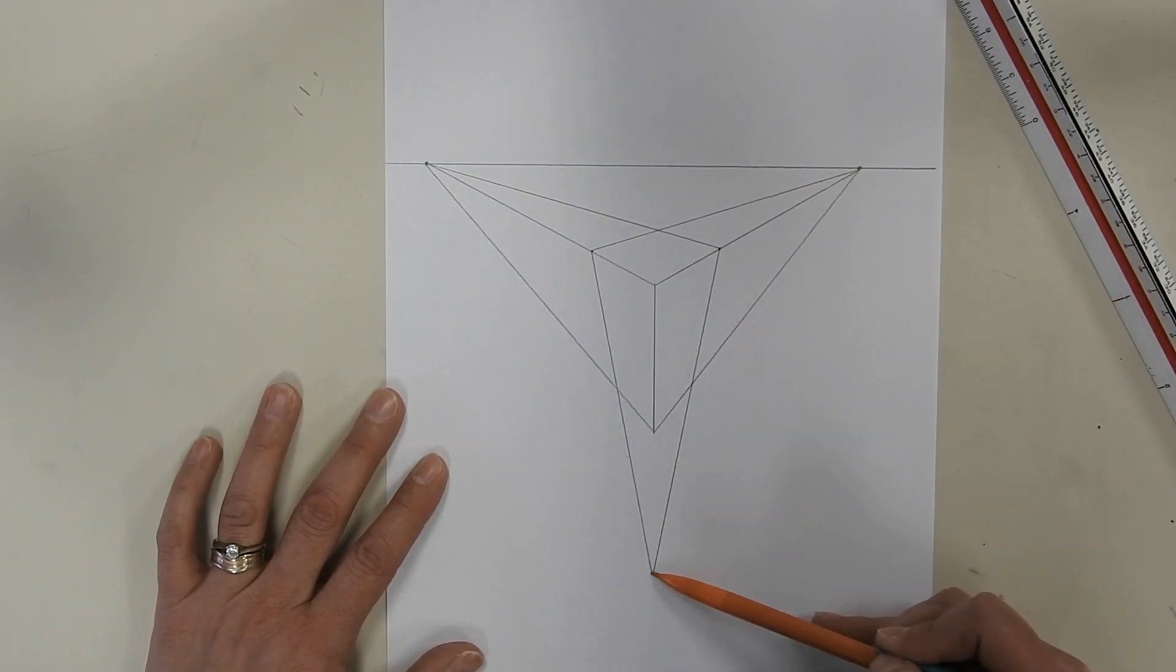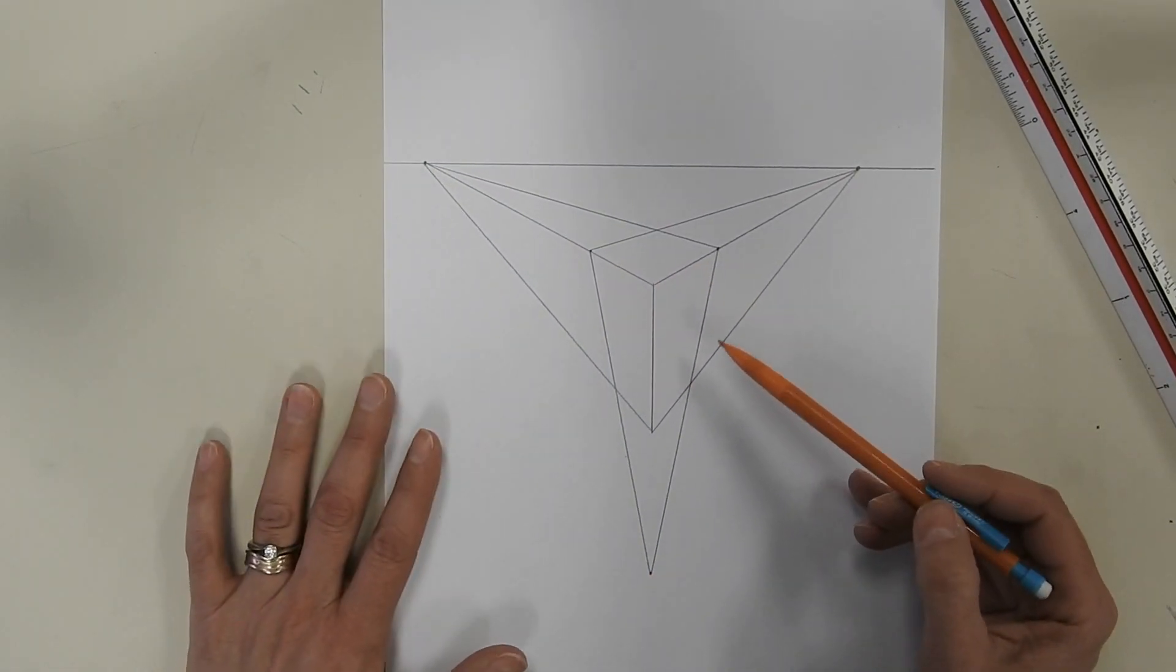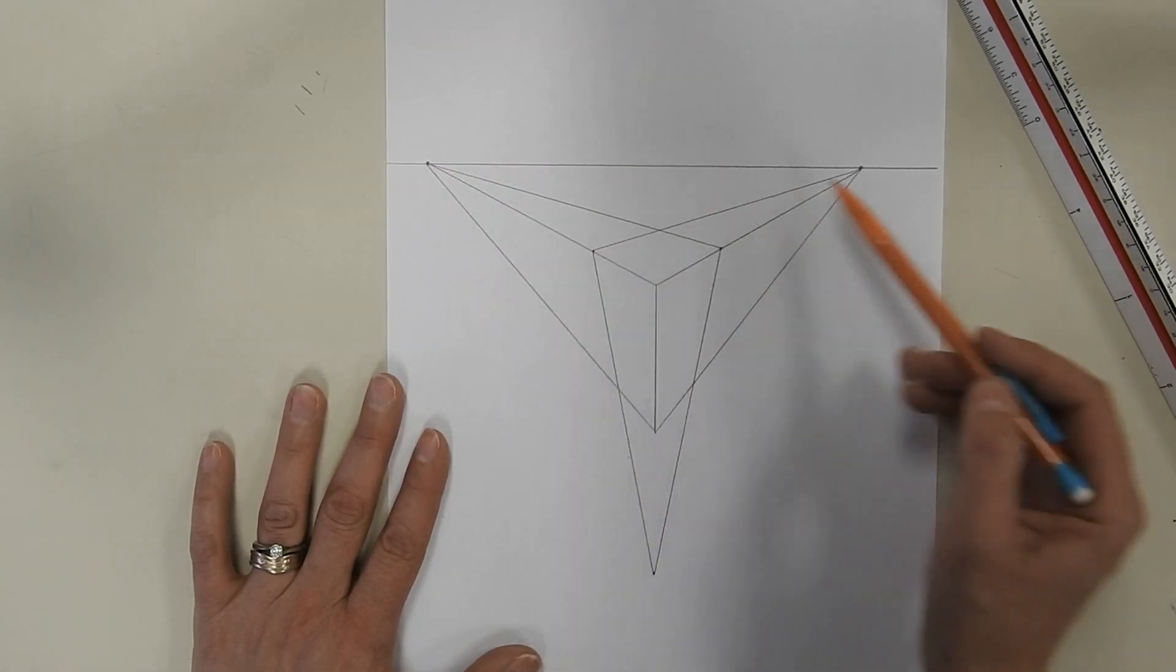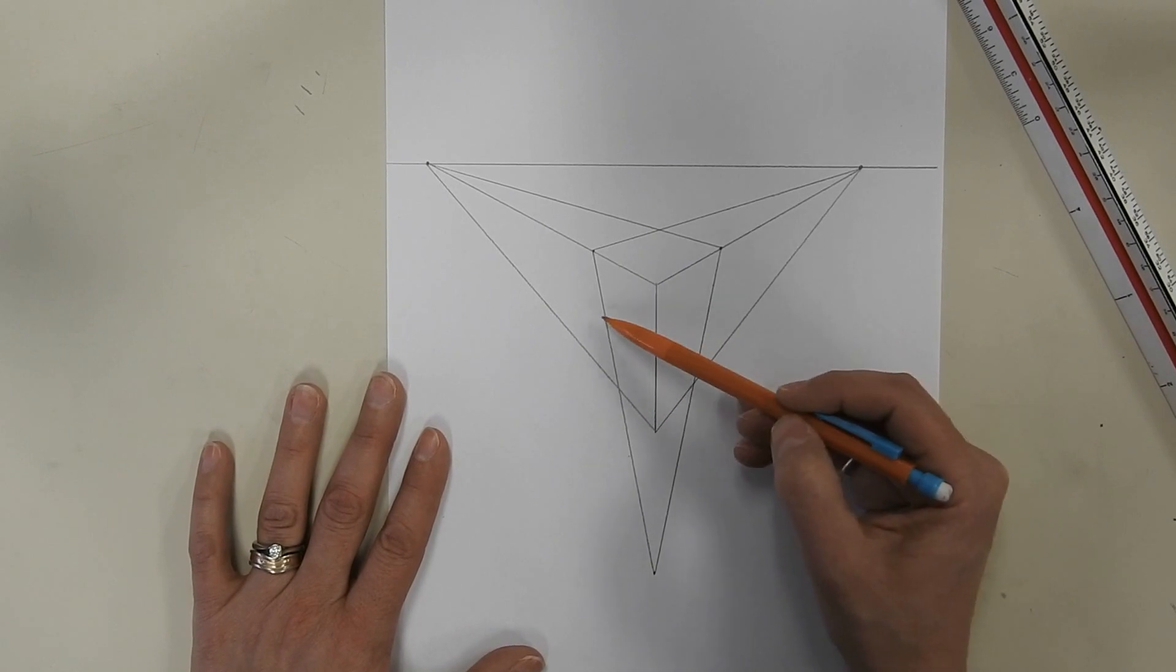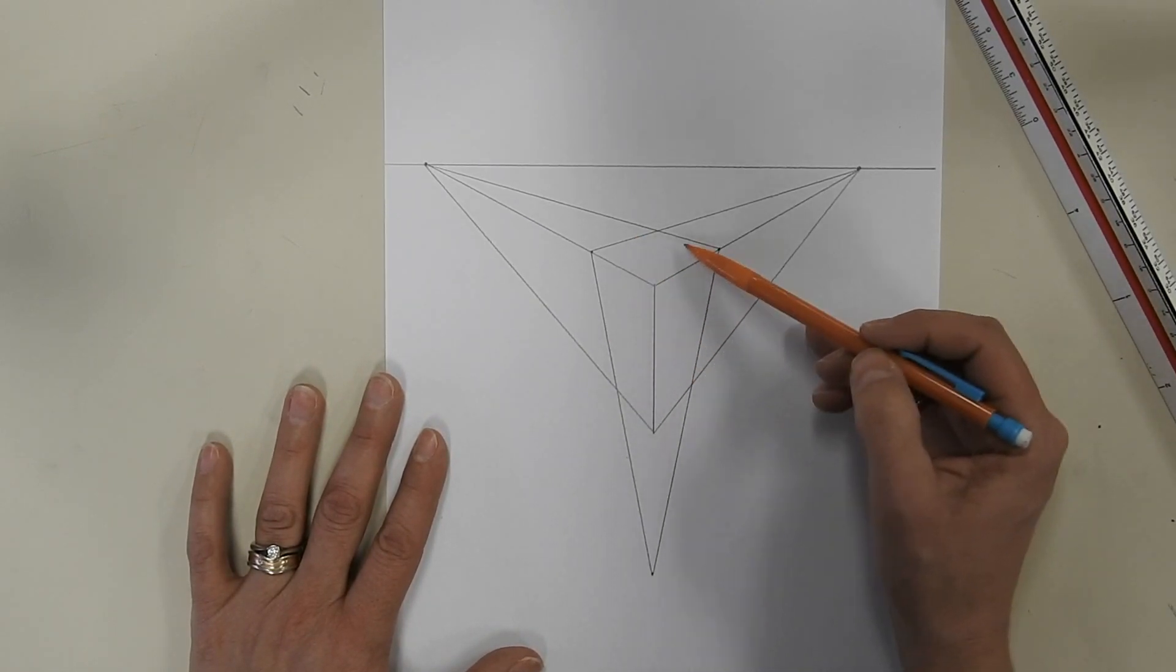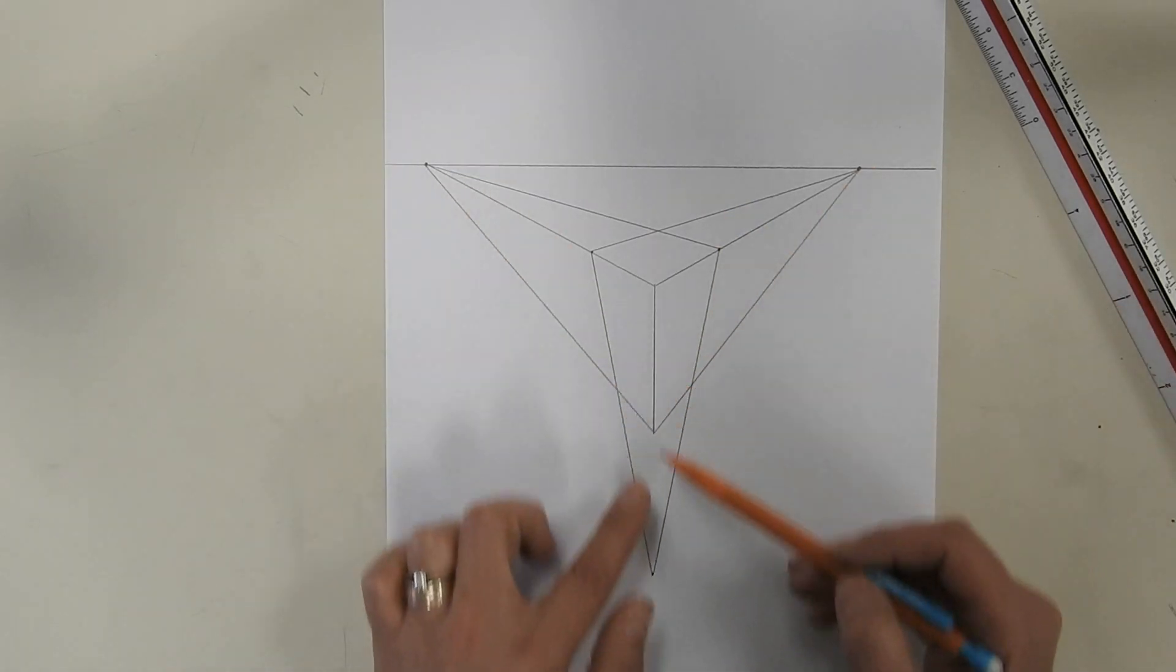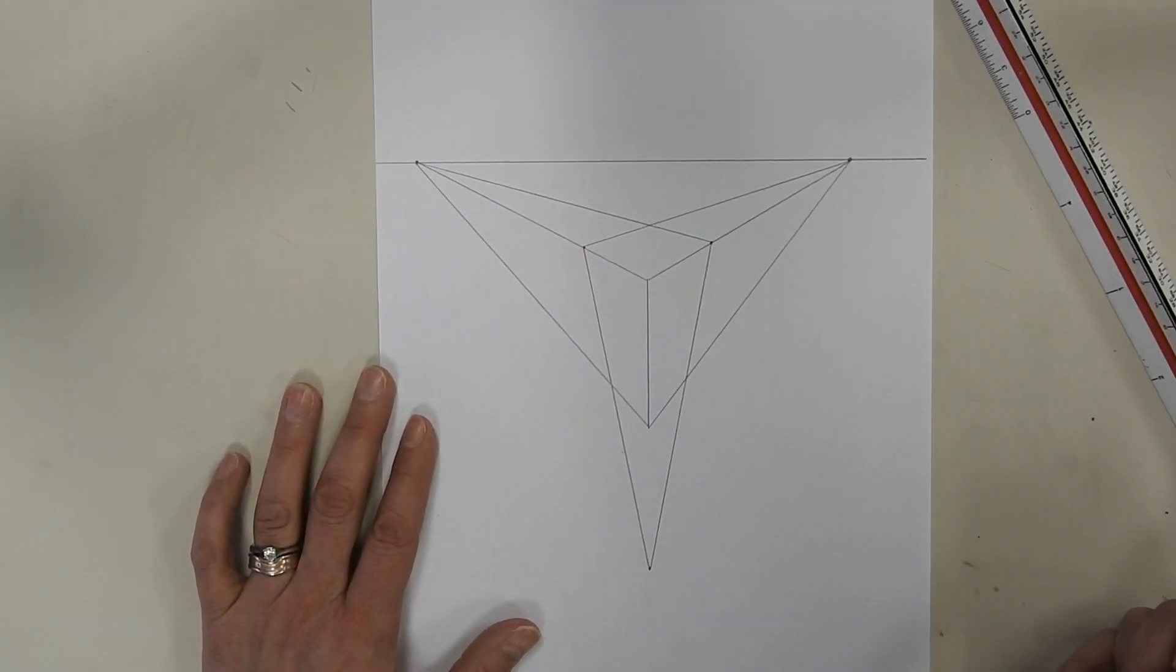One-point, two-point, three-point. If we think about what we talked about earlier, you're starting with three points, a leading edge, and there are no sets of parallel lines. They all converge to a vanishing point. And there you have it, three-point perspective.